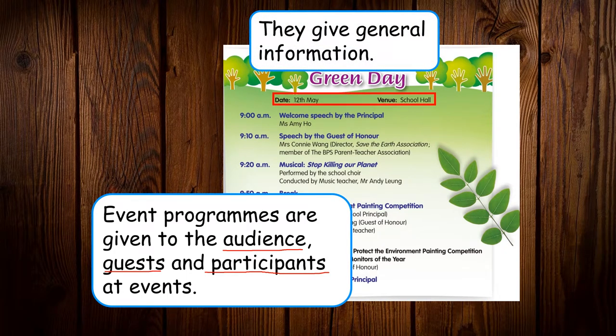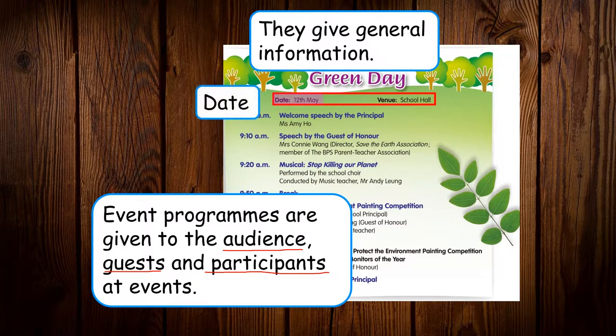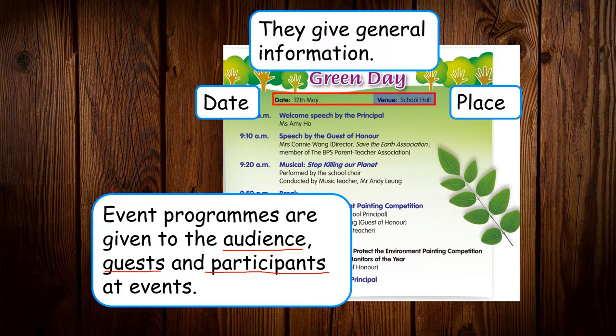Normally event programs give you some general information. For example, the date and the venue. Venue means the place — the where.